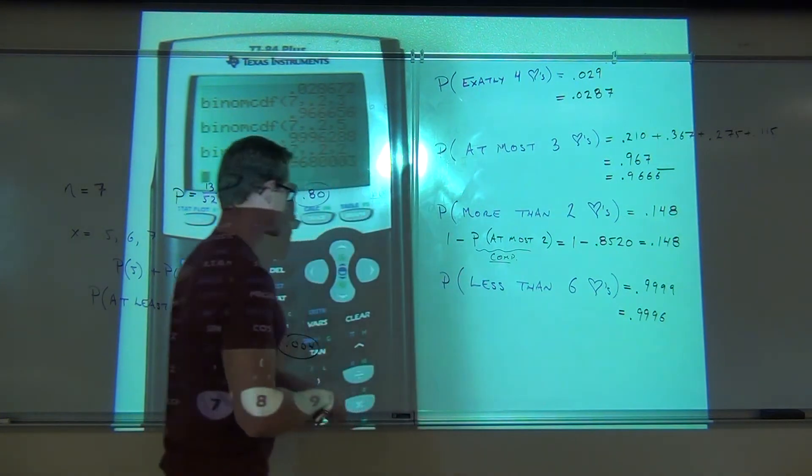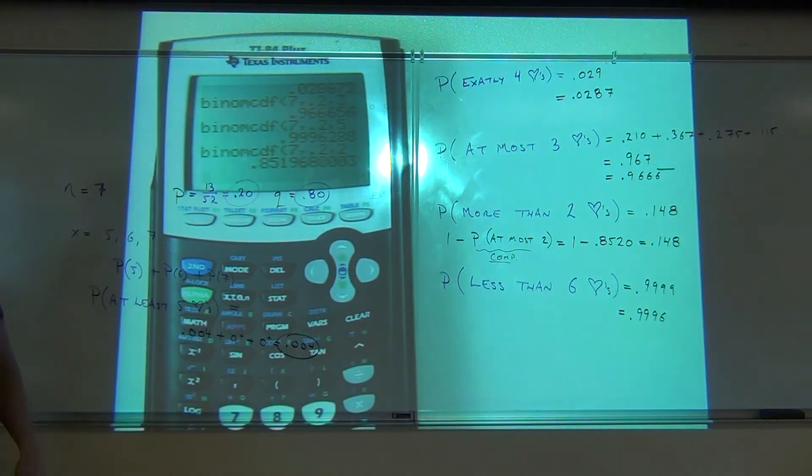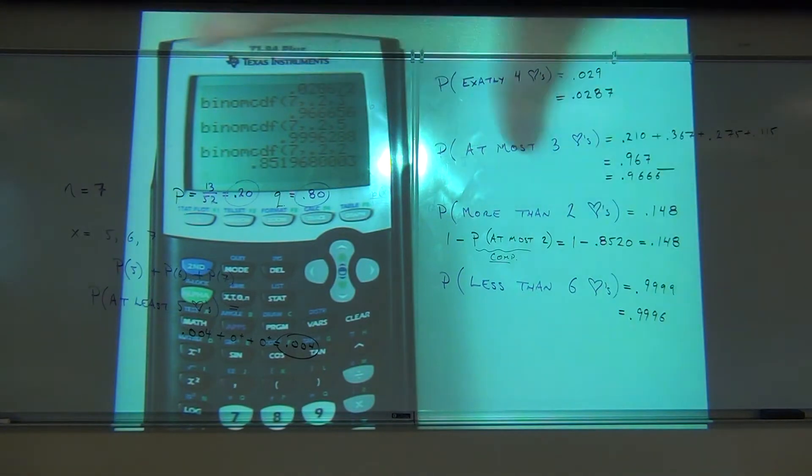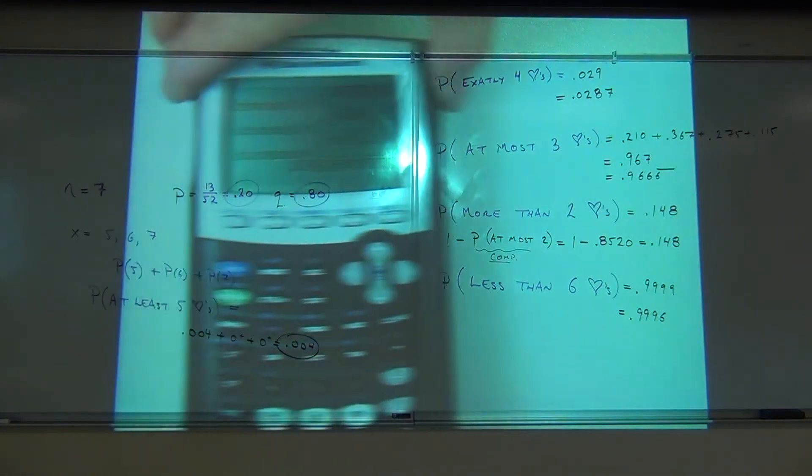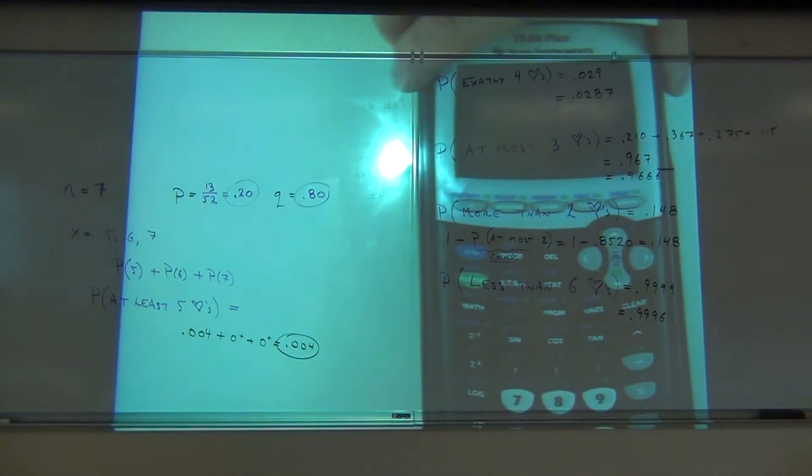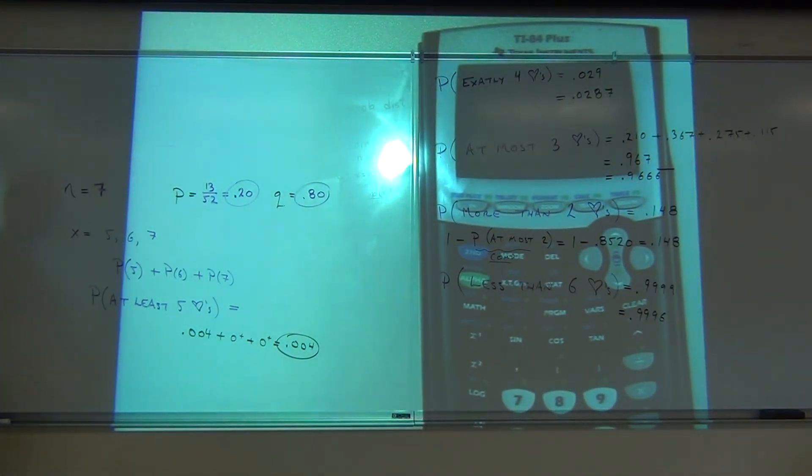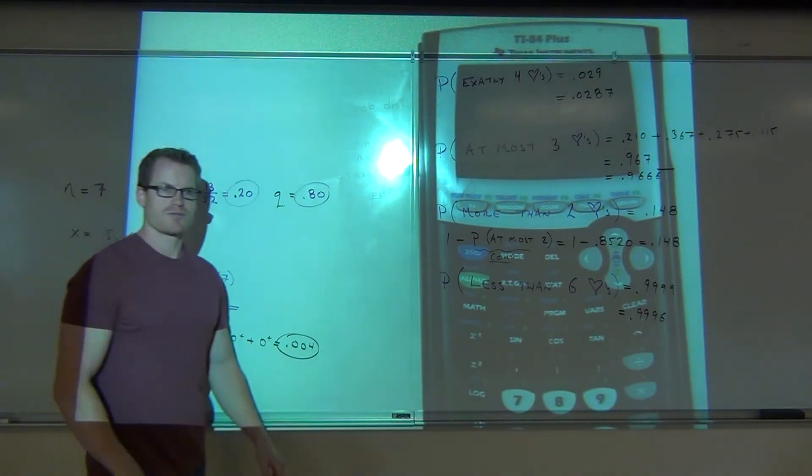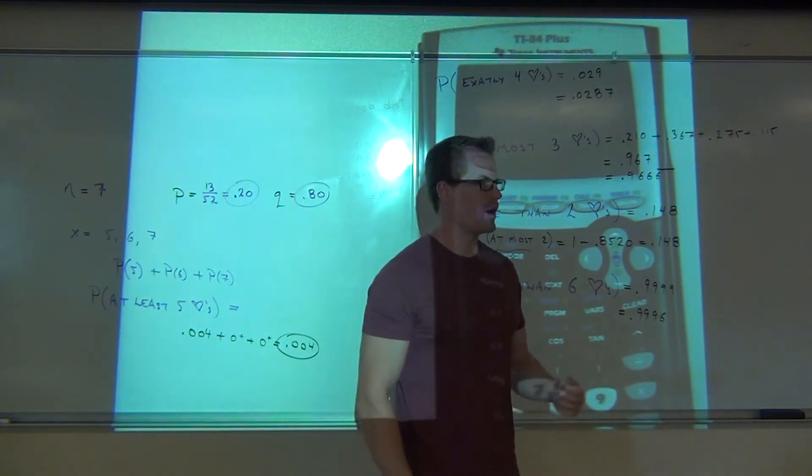Let's try one more. It's kind of over here in the dark. Change my size here. We want the probability of at least five parts. At least five parts means what? What does at least five mean to you?